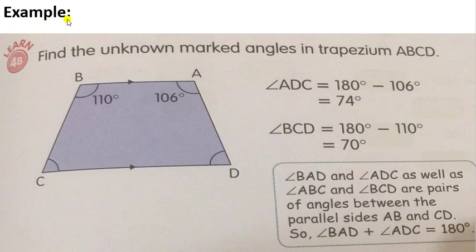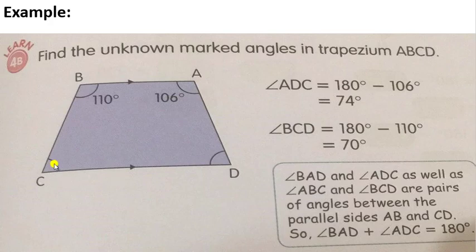Here is an example: find the unknown marked angle in trapezium ABCD. We need to find angle ADC and angle BCD. To find angle ADC, since the sum of angles between parallel sides equals 180 degrees, we take 180 degrees minus 106 degrees, which gives us 74 degrees.